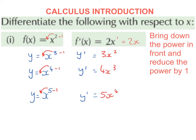In our next example we have y equals x to the power of 4. Again we bring down the power in front, and reduce the power by 1. So we bring down the power in front, we get 4x, and 4 take away 1 is 3. So the derivative is going to be 4x cubed.